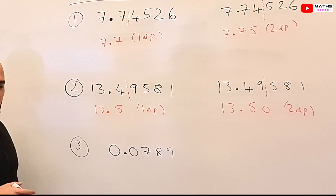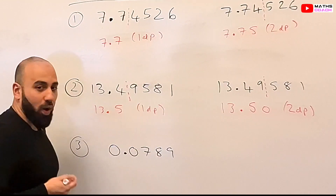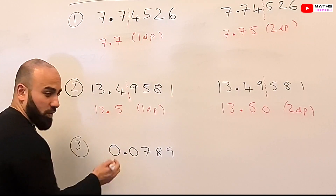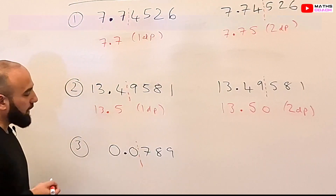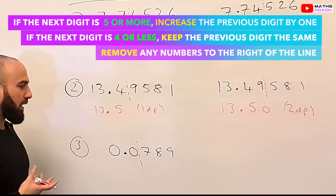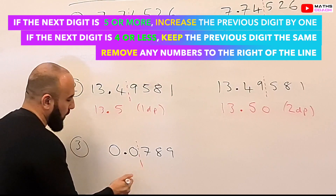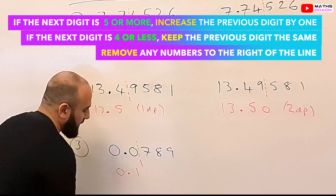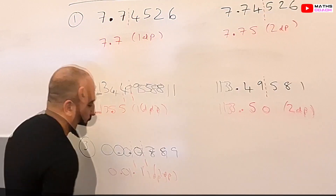Let's look at one more example — rounding this number to one decimal place. After the decimal point we've got a 0. We draw a line after the 0 and look at the number next to it. Because it's 5 and above — 7 is above 5 — we'll increase the 0 to a 1. So we've got 0.1 to one decimal place.